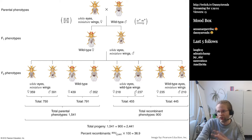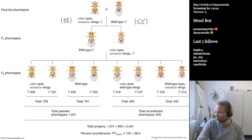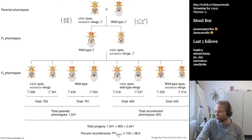When we add up the numbers — which I think are actually the real numbers from the original experiment — we observe 750 animals with white eyes and miniature wings and 791 who are wild-type. In total we have 1,541 offspring with parental phenotypes and 900 with recombinant phenotypes. So we calculate how many offspring we had in total, and then 900 out of the total recombined — multiply by 100 — gives us 36.9 centimorgan between the W gene and the M gene. It's actually 0.369 Morgan, but that's why we use centimorgan, so we get a percentage.